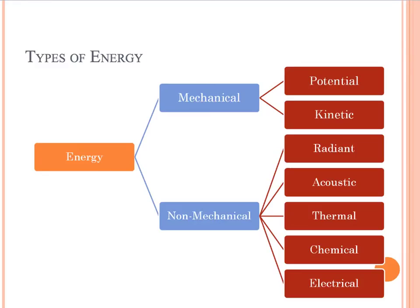We've talked about a number of types of different energies. The mechanical energies we've talked about are potential and kinetic — remember, potential meaning energy stored up, energy of position; kinetic meaning energy of motion. And the non-mechanical energies such as radiant or light, acoustic or sound, thermal or heat, chemical, and electrical.